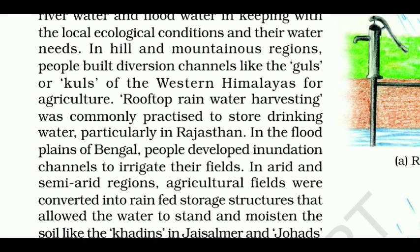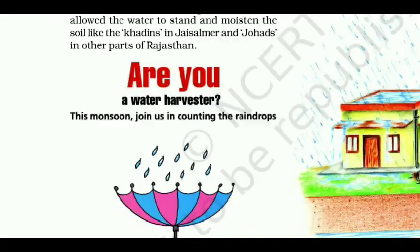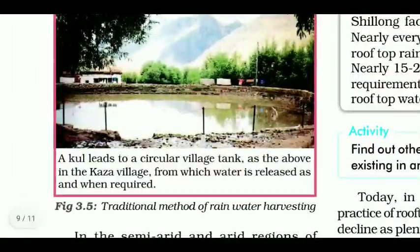In hill and mountainous regions, people built diversion channels like the guls and kuls of the western Himalayas for agriculture. Rooftop rainwater harvesting was commonly practised to store drinking water, particularly in Rajasthan. In the flood plains of Bengal, people developed inundation channels to irrigate their fields. In arid and semi-arid regions, agricultural fields were converted into rain-fed storage structures that allowed water to stand and moisten the soil — like the khadins in Jaisalmer and johads in other parts of Rajasthan. A kul leads to a circular village tank from which water is released as and when required.